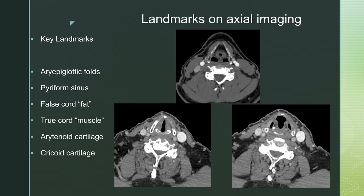On axial imaging, the key landmarks are those aryepiglottic folds, with the piriform sinuses lateral to them. You have the fat of the false cords, which is lower density than the muscle of the true vocal cords, to help you distinguish between them. You have the arytenoid cartilage, seen right at the bottom of the false cords and at the true vocal cords, and the cricoid cartilage, which is posterior to the true vocal cords.